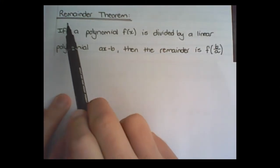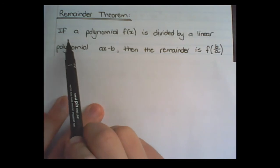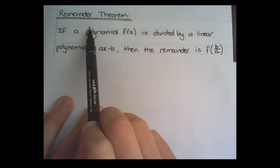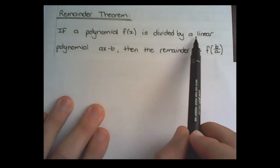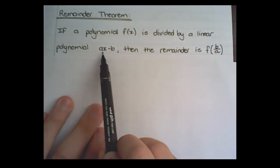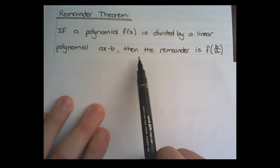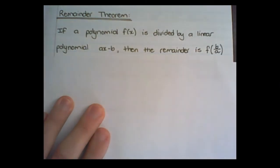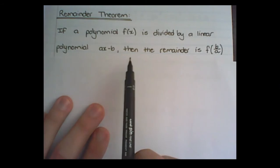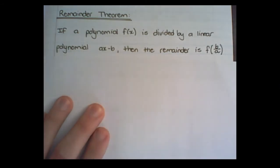We are now moving on to the remainder theorem. If a polynomial, that is an algebraic expression fx, is divided by a linear polynomial ax minus b, then the remainder is f of b over a in the place of x. This sentence can look quite daunting, but it is actually a very simple concept.